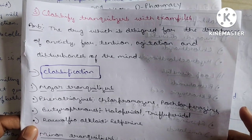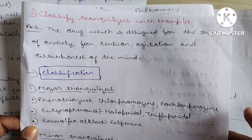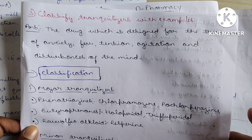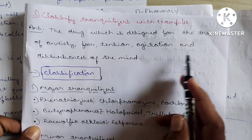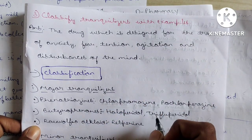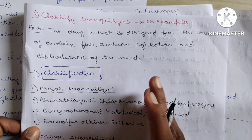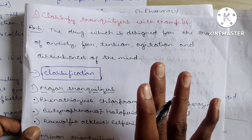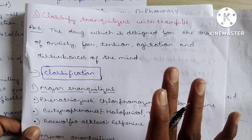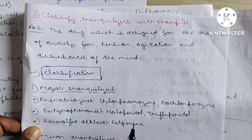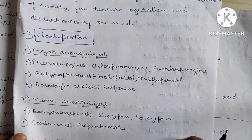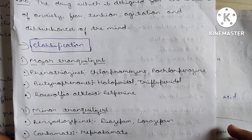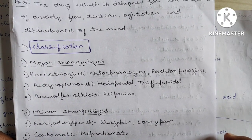Question 3: Classify tranquilizers with examples. Tranquilizers are drugs designed for treatment of anxiety, fear, tension, agitation, and disturbance of the mind. They help overcome problems of anxiety, agitation, and fear. There are two types: major tranquilizers and minor tranquilizers.